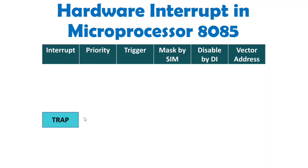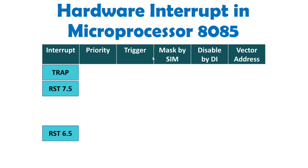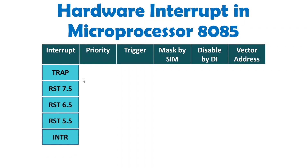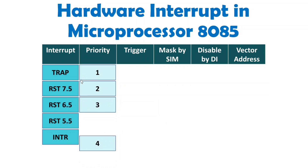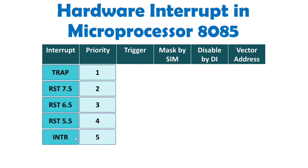With hardware interrupts in microprocessor 8085, we have a total of five interrupts: TRAP, RST 7.5, RST 6.5, RST 5.5, and INTR. When we talk about priority, TRAP has the highest priority. After that, RST 7.5 has second priority, RST 6.5 has third priority, RST 5.5 has fourth priority, and INTR has the least priority.